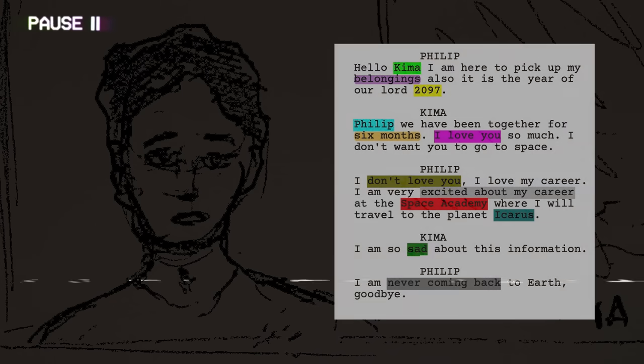Hello, Kima. I am here to pick up my belongings from your flat. Also, it is the year of our lord 2097. Philip, we have been together for six months. I love you so much. I don't want you to go to space. I don't love you. I love my career. I am very excited about my career at the Space Academy, where I will travel to the planet Icarus. I am so sad about this information. I am never coming back to Earth. Goodbye. I did communicate all the information I wanted to, but that scene felt robotic because I forgot my filters.